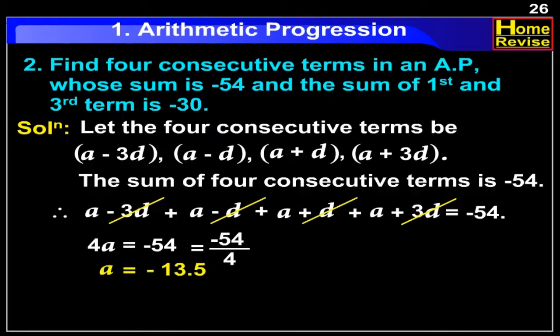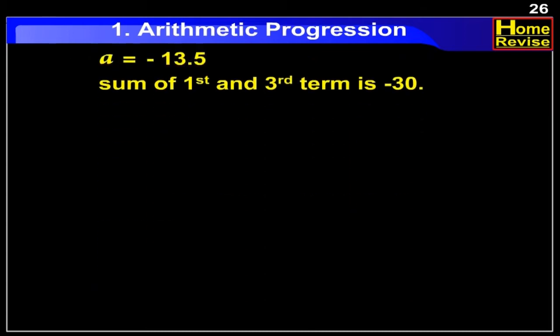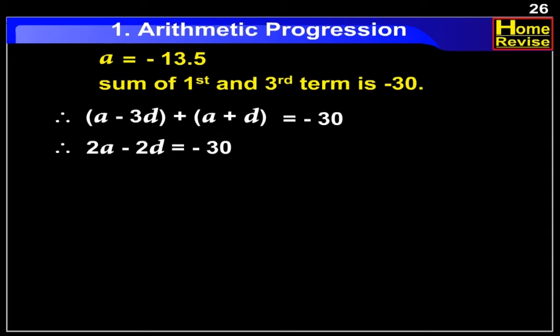Now, it is also given that the sum of the 1st and the 3rd term is minus 30. Therefore, we have (a minus 3d) plus (a plus d) is equal to minus 30. Therefore, 2a minus 2d is equal to minus 30.